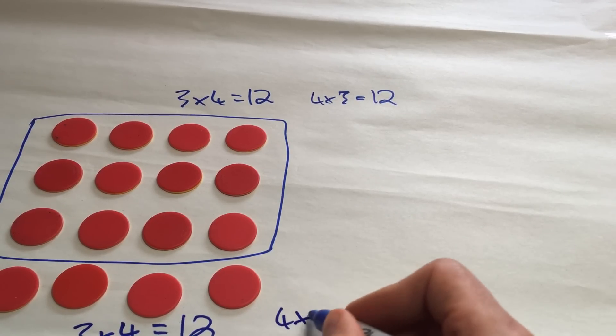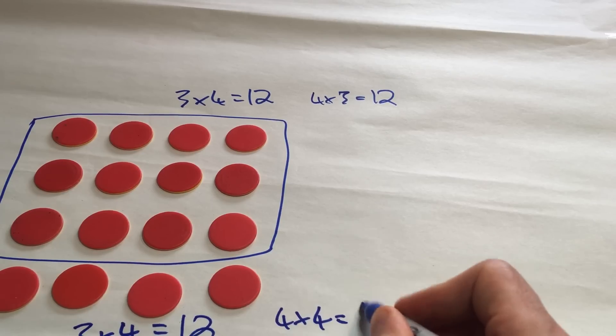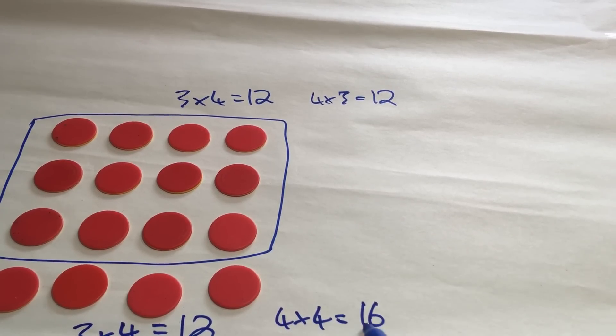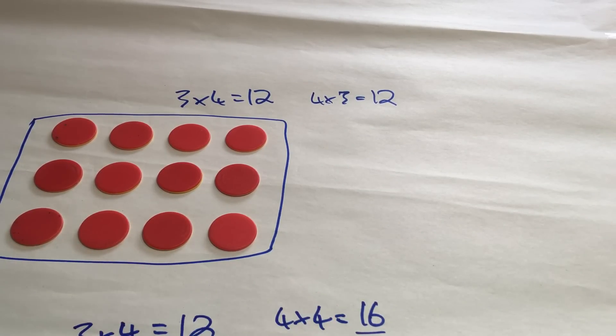So, well, what about 4 lots of 4? It is 16. What's the difference? It is here. It is 1 more lot of 4.